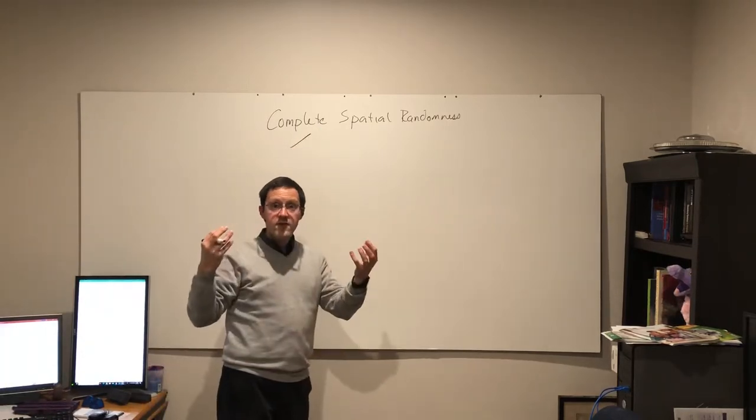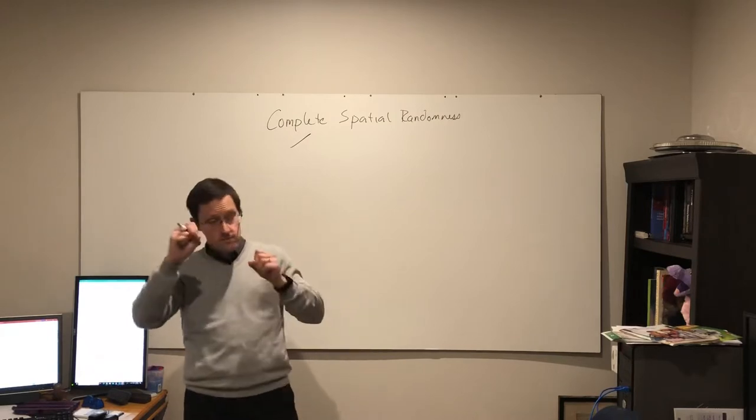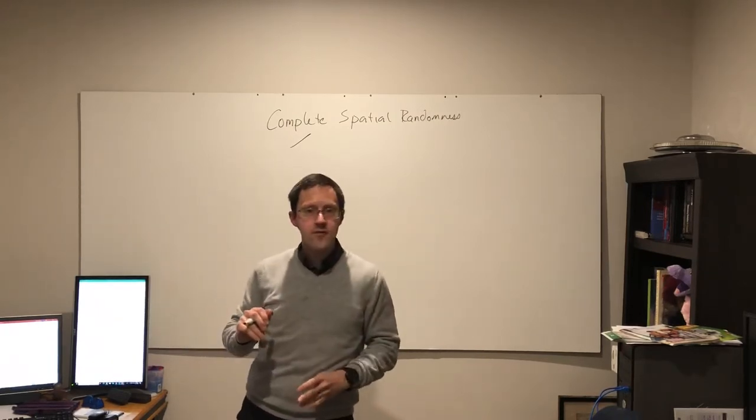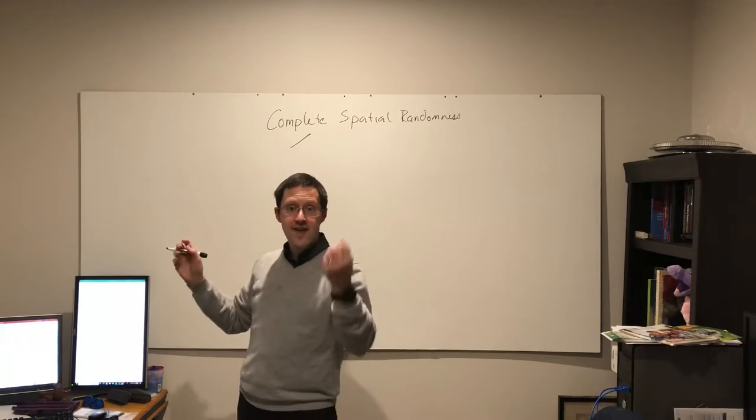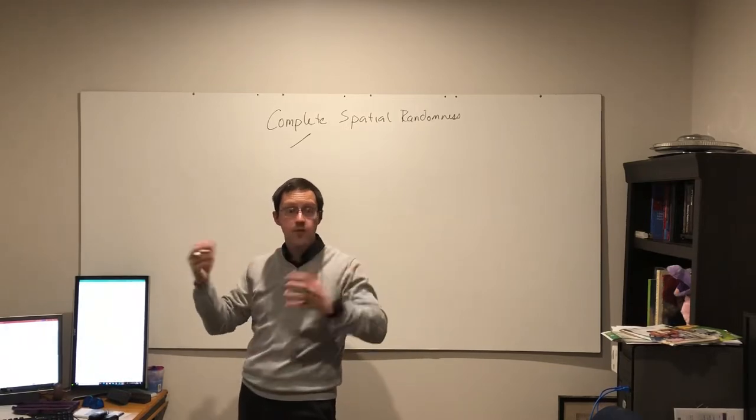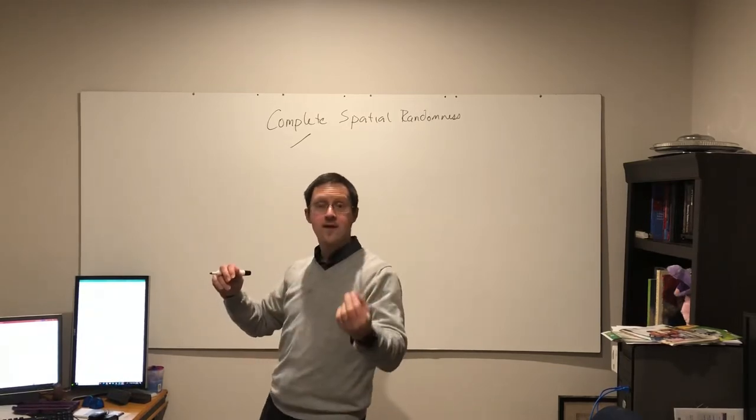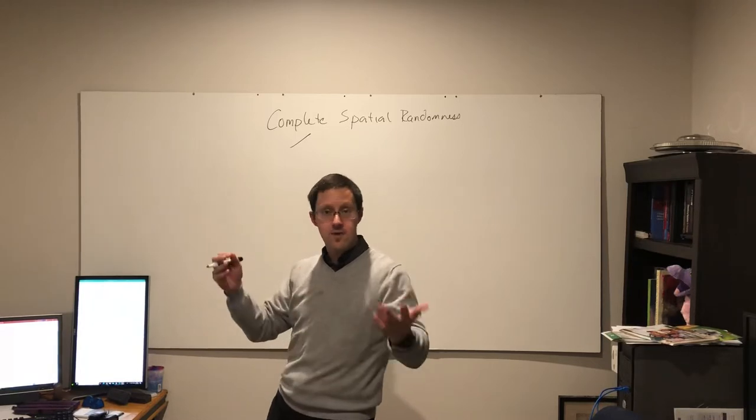Complete spatial randomness has two assumptions, two components to it. The first of these is that when randomly locating points, for any individual point, any location is equally likely. So a point can be anywhere with equal probability.